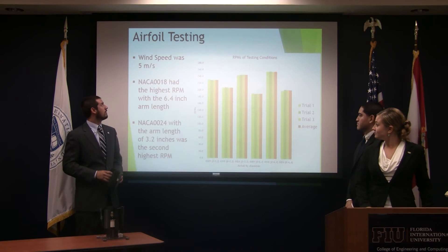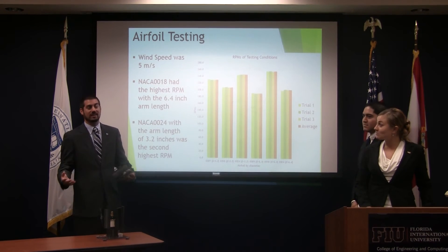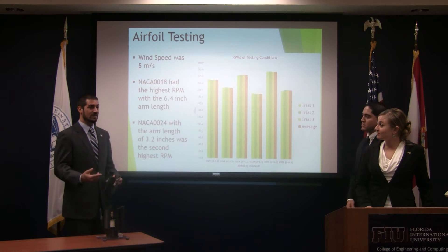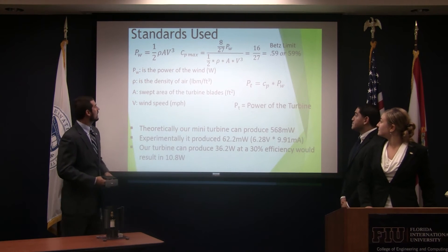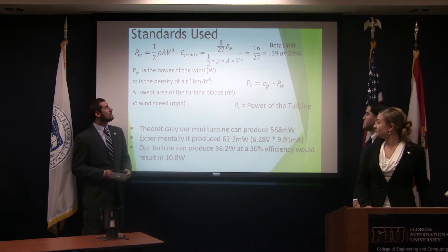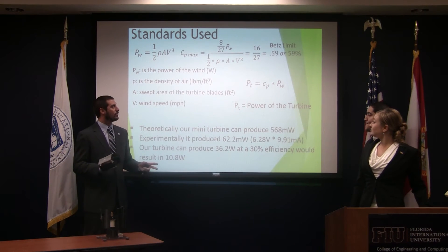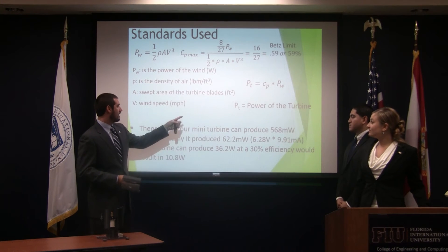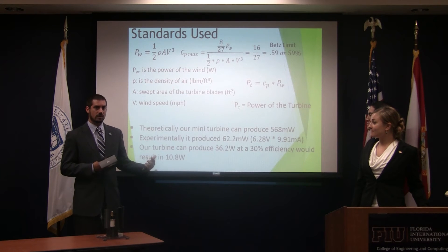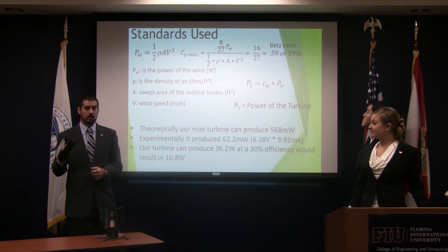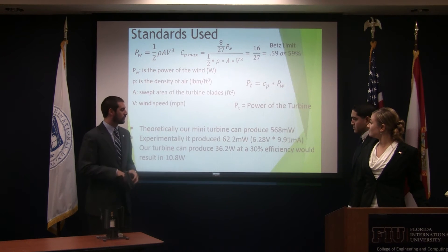We did the wind speed testing at 5 meters per second. When we initially tried to do this, we didn't have a bearing inside the system, just to show that without a bearing you get practically nothing — there was no airflow. When we went to do testing with the bearing, it sped up considerably until it actually rotated. For the standards used, there were equations to find the power of the wind using air density, velocity, and the swept area of the turbine between the diameter of the arms and the length of the blades. There's a Betz limit stating that you cannot get more than 60% from wind energy for a turbine. We used a coefficient of performance of 15% — for a simply constructed vertical turbine you'd get around 15%, for a well-made one 35%. Using 15% coefficient of power, we theoretically determined our mini turbine can produce 568 milliwatts.